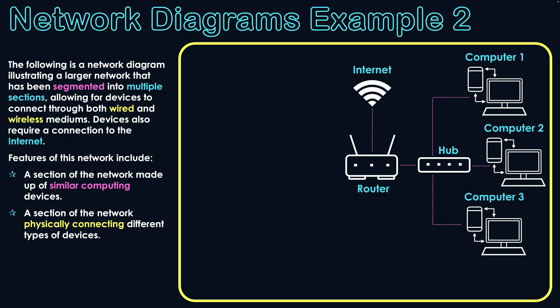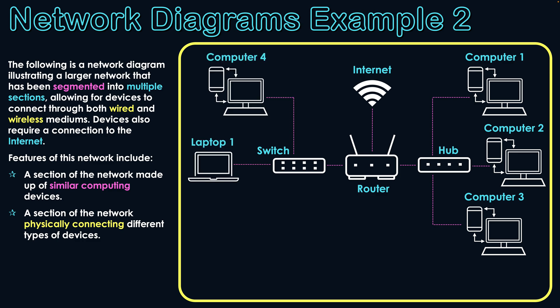The next part of the network connects different types of devices physically. While the hub also connected devices physically, all those devices shared the same type of data. Now, with different types of devices, different communication channels are needed. So the choice for central node here — connected to the router — is a switch, which has multiple ports, each capable of its own communication channel. A computer and a laptop are connected to the switch. Importantly, the laptop is connected via a physical cable — it is not a wireless connection. The only device capable of wireless connections is the router.